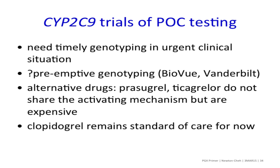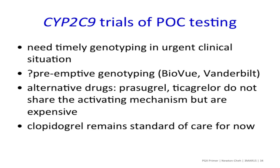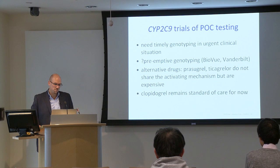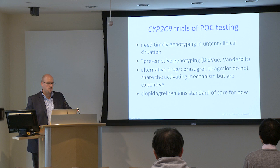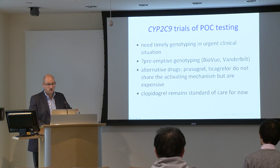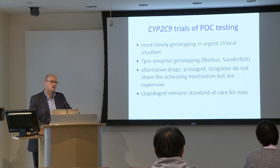CYP2C19 trials of point-of-care testing — little handheld units that could be tested in the urgent clinical environment — are under review. There are alternative drugs that do not require the same activating enzyme effect, but clopidogrel is generic and now cheaper. Prasugrel and ticagrelor have not had great adoption largely because of uncertainty about the relative balance between efficacy impact and cost. Clopidogrel remains standard of care for now, although various high-risk individuals might get these other agents.